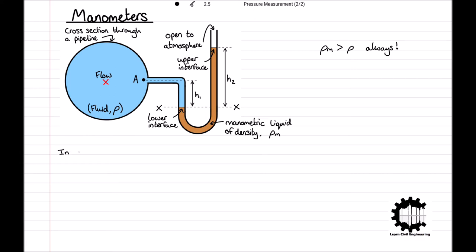Hence, the gauge pressure at elevation x in the right-hand side, Px is equal to ρmgh2, and the gauge pressure at elevation x in the left-hand side, Px is equal to Pa plus ρgh1. Equating the gauge pressures at elevation x gives ρmgh2 is equal to Pa plus ρgh1.